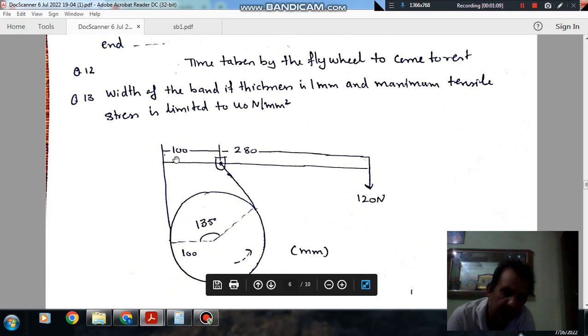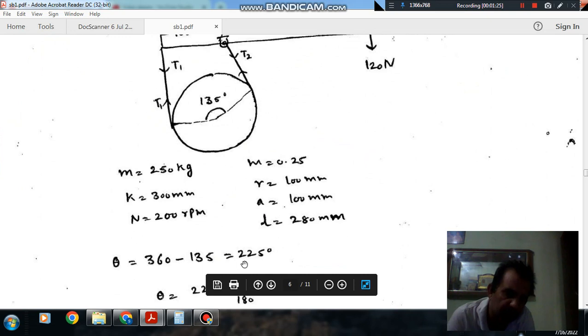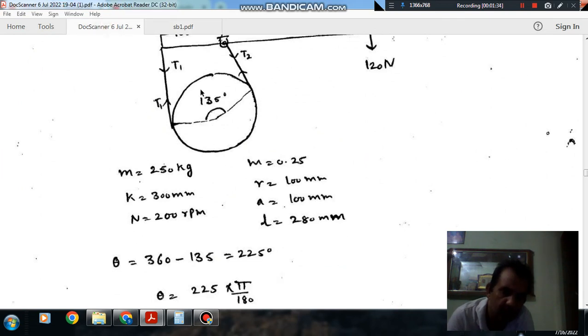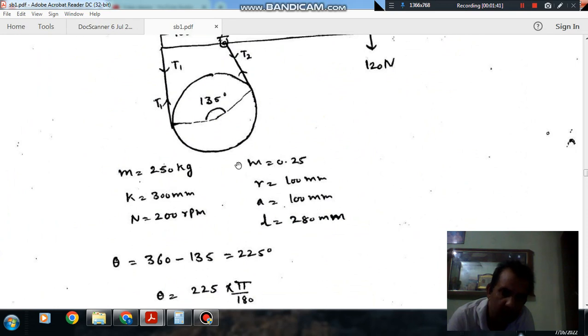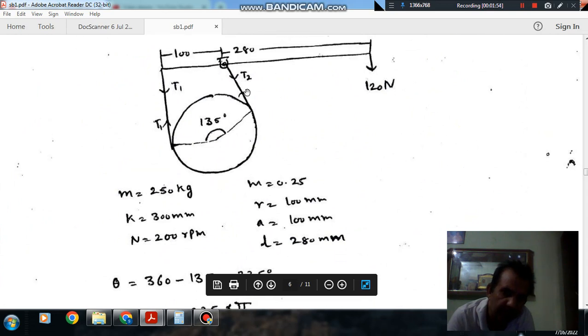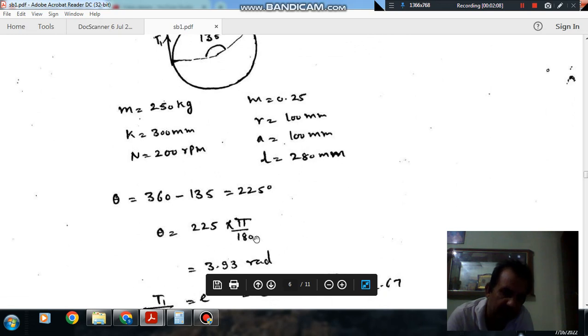This is the figure given. This angle is 135 degrees and radius is 100 mm. This is 100 mm, this is 280 mm, and this is 1 cm. As this angle is 135 degrees, the angle of contact will be 360 minus 135, that is 225 degrees. Mass is given as 250 kg, coefficient of friction is 0.25, radius of gyration is 300 mm. This A is 100 mm, this L is 2A, and radius of drum is 100 mm.